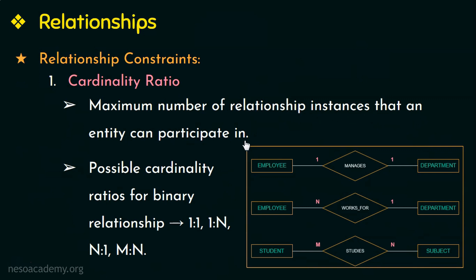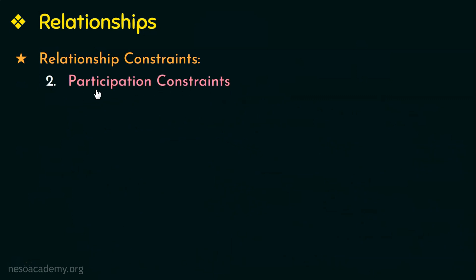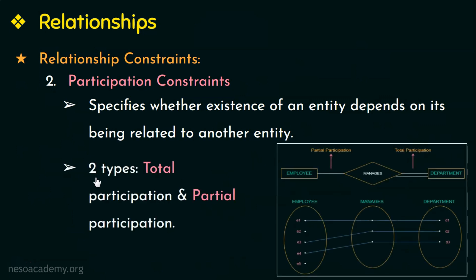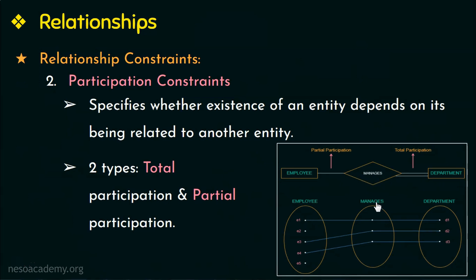The next constraint is participation constraints. Participation constraints specify whether the existence of an entity depends on its being related to another entity. There are two types: total participation and partial participation. In this example, we have two entities — employee and department — with the relationship 'manages,' containing three relationship instances. The employee entity set has E1, E2, E3, E4, and E5, and the department entity set has D1, D2, and D3.